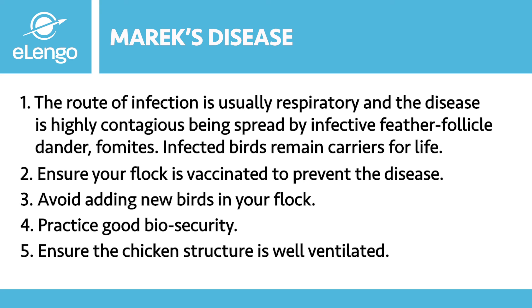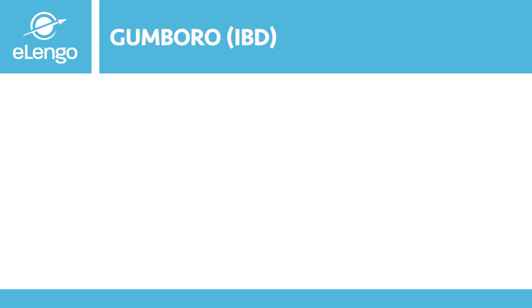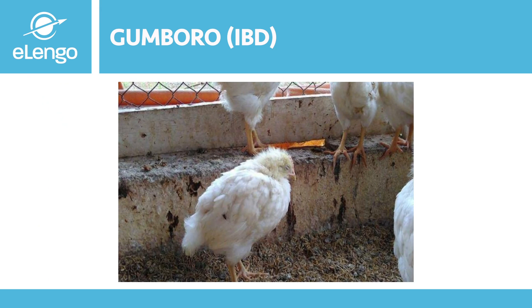The next disease we are going to look at is Gumboro, or IBD — that is Infectious Bursal Disease. This is a highly contagious viral infection found in chicken. It is important to note that the virus that causes this disease is extremely hardy and can survive in a wide range of environmental conditions, therefore it becomes very difficult to eliminate once you have it in your flock.